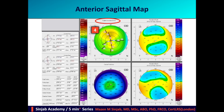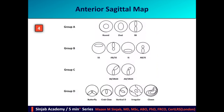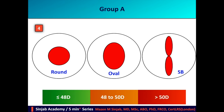The anterior sagittal map: we have to study the patterns and some numbers. Patterns are classified into four categories. Group A contains symmetric patterns: round, oval, and symmetric bowtie. Not every symmetric pattern is normal — we have to look at the KM. Whenever the KM is normal, those patterns are normal; otherwise they are either moderate or high risk.